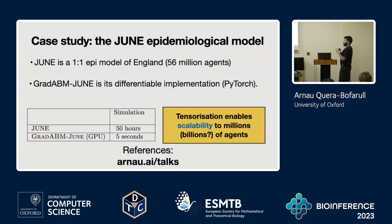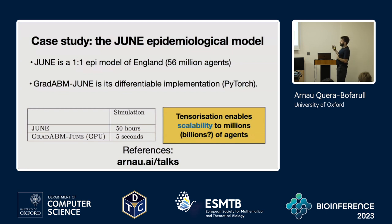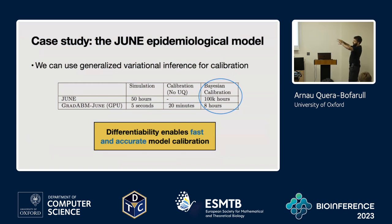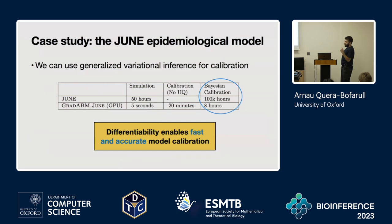The tensorization approach enables scalability of ABMs to millions if not billions of agents. By implementing JUNE in PyTorch we get all gradients of outputs with respect to inputs efficiently. I'll show that we were able to do a full Bayesian calibration of 8 million agents — from 100,000 hours for the original model down to 8 hours on commodity hardware on a supercomputer.